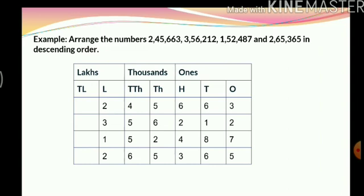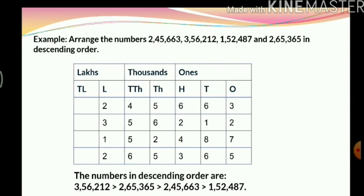Here I have another example with 4 numbers, arranged in descending order. In the lakhs place the greatest number is 3,56,212, so that's easy. Next we have two 2s in the lakhs place, so we move on to the ten-thousands place. From there we can see that 2,65,365 is the next greater number, followed by 2,45,663. And finally we are left with 1,52,487. Greater-than signs are used to show descending order.